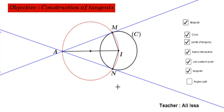By construction, A-M and A-N are two tangents issued from the external point A to the circle C. But we have not finished yet.